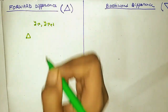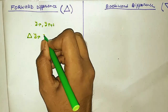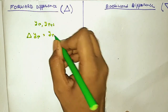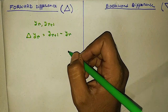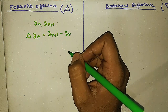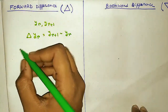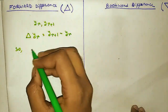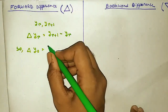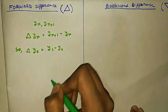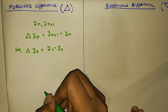So what is the forward difference? Notice the suffix. For the current suffix r, in forward difference we subtract the current suffix from the next suffix. The next suffix is r plus 1, so we subtract yr from yr plus 1. For example, for y0 the next suffix is y1, so delta y0 equals y1 minus y0.